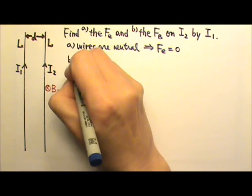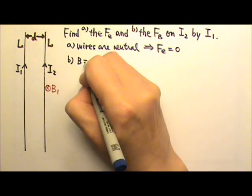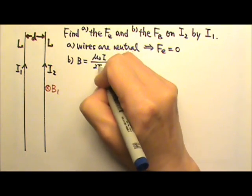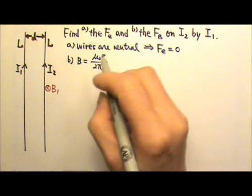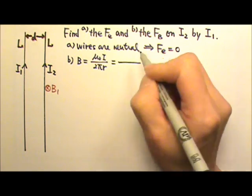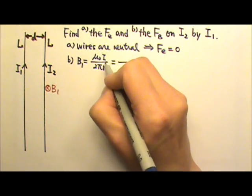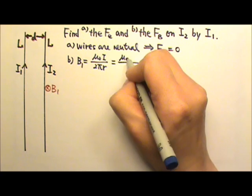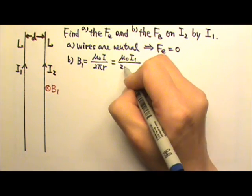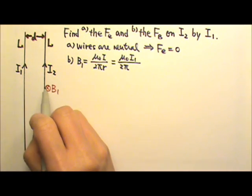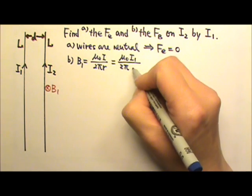And I can use the equation, B equals mu naught I over 2 pi r to find the strength of this magnetic field. This B1 is produced by current I1, and the distance between these two is D.